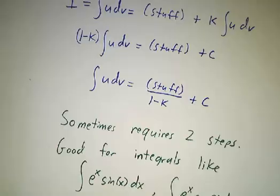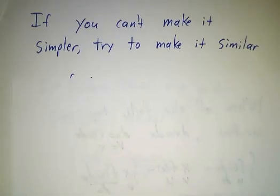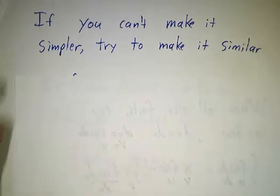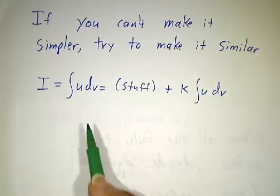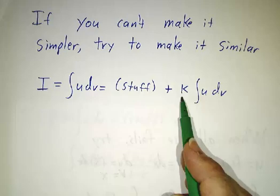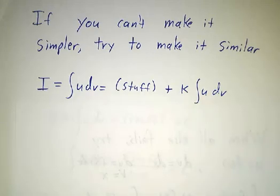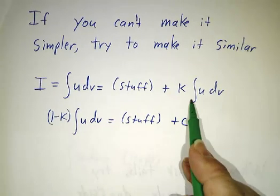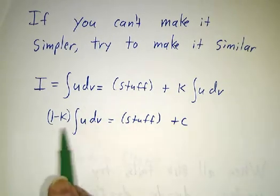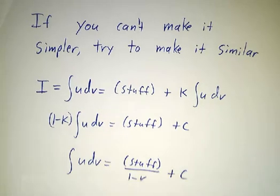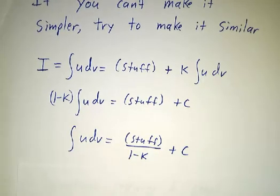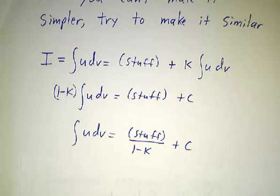Finally, if you can't do anything to make your integral simpler, try to make it similar. That was the going in circles trick. If you've got an integral that's of the form udv, look for ways to integrate by parts. Maybe you'll have to integrate by parts twice to do this to turn it into a bunch of stuff plus a multiple of the original integral. And then you just subtract off k times the integral from both sides. You get 1 minus k times the original integral equals the stuff. And you get that the original integral is the stuff divided by 1 minus k, and of course, you always have the arbitrary constant.